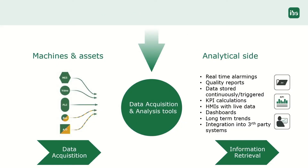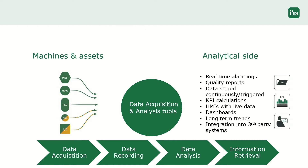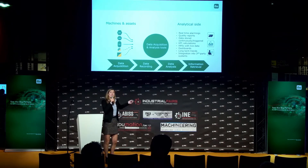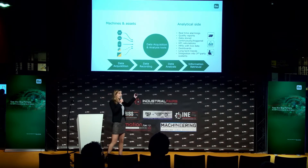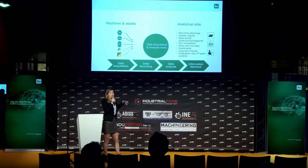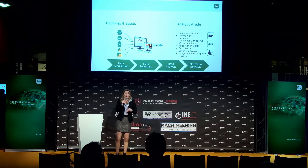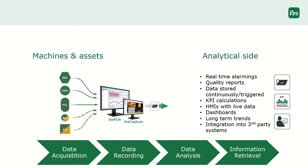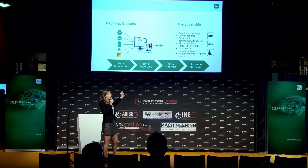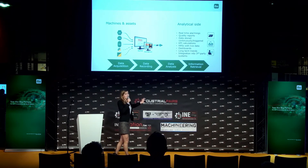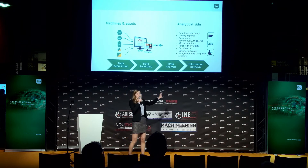So how do we get from this complex data acquisition side to transparent information? To get there, we need a tool that cannot only acquire the data, but also record it and analyze it, so that the data can become transparent information. This can be done with the IBA system. IBA has developed a tool called IBA PDA — Process Data Acquisition. With our software we can acquire data from all these different data sources, record it, visualize it in real time, synchronize the data, and store it into data files.